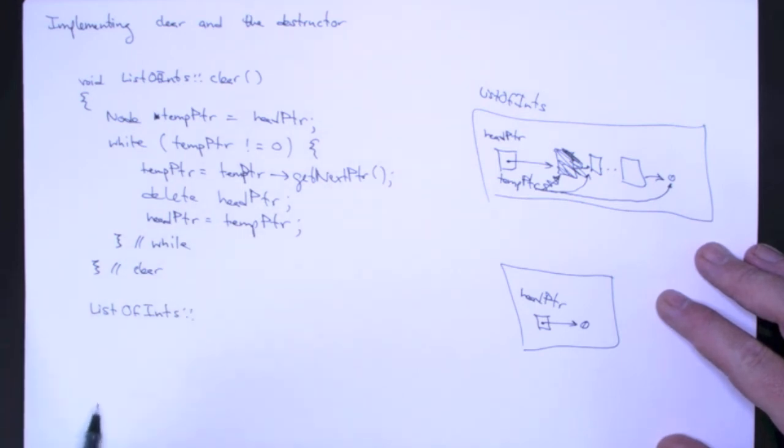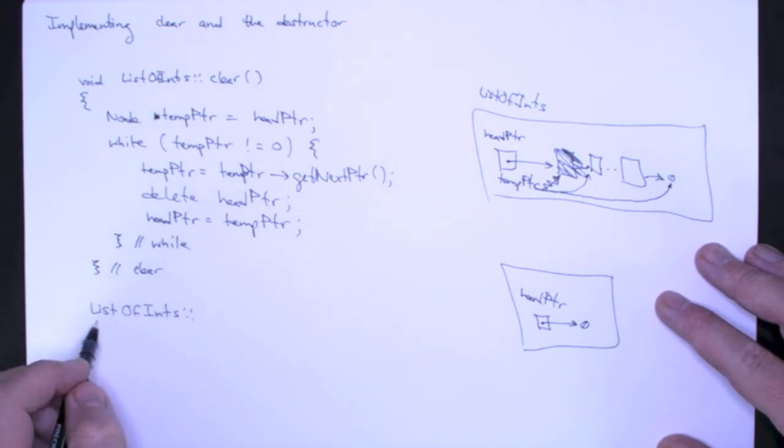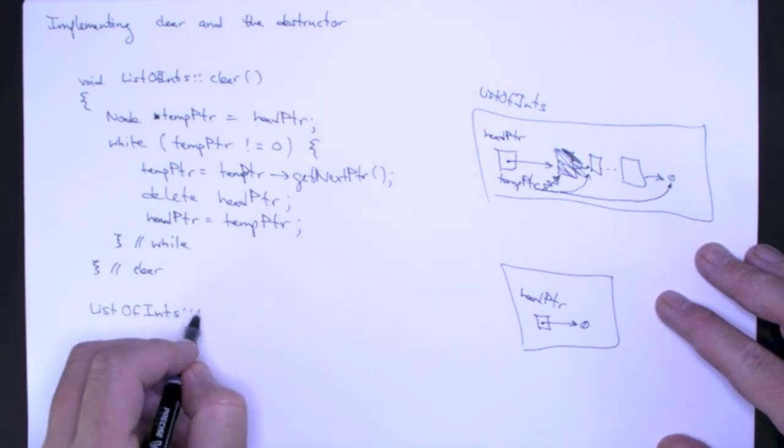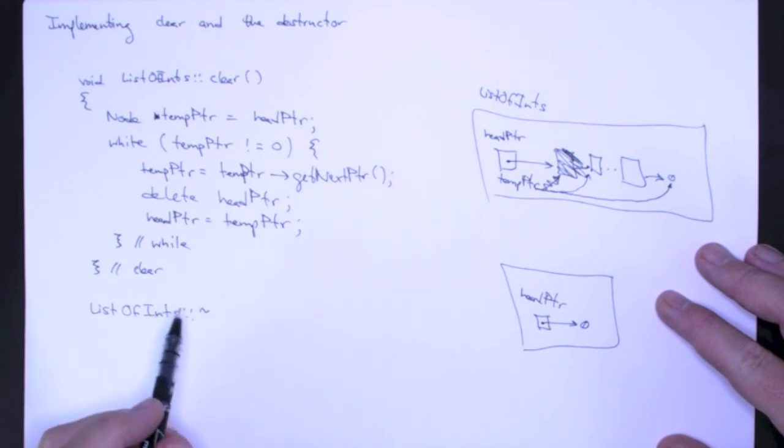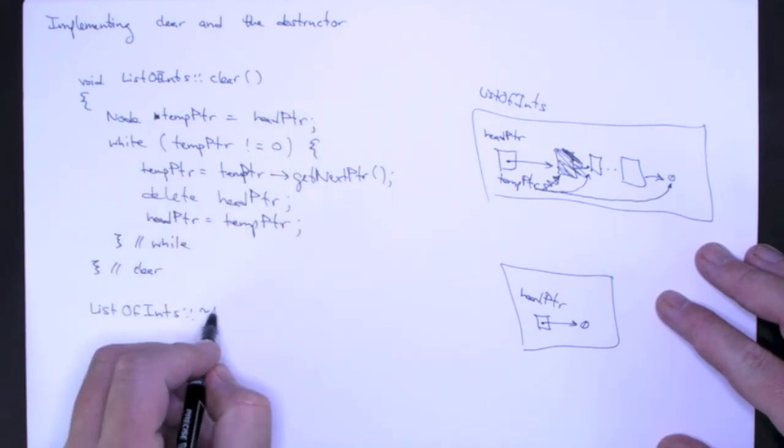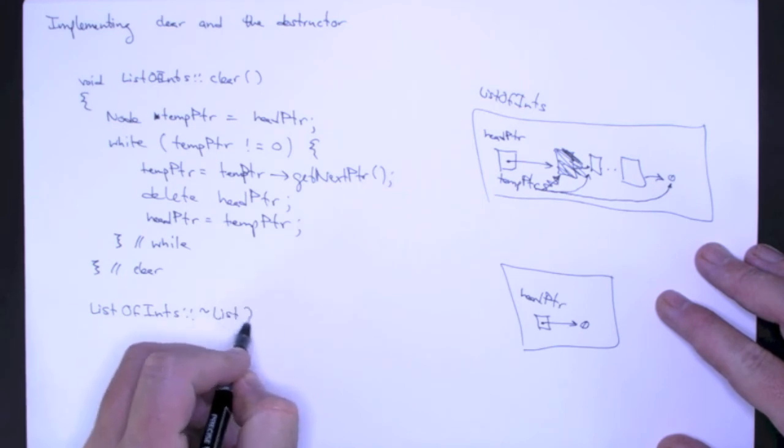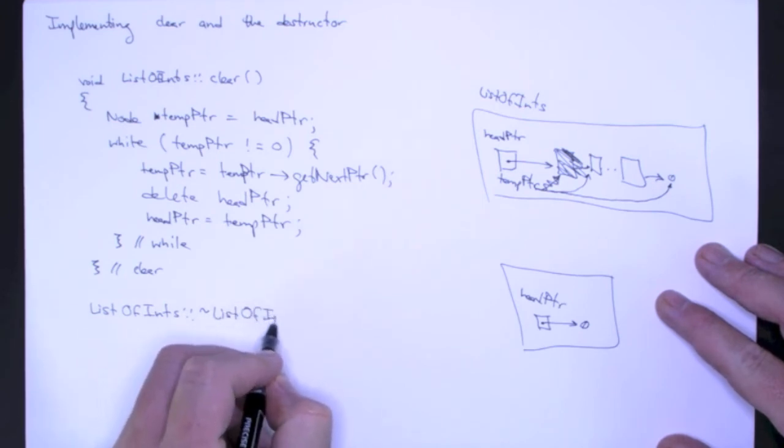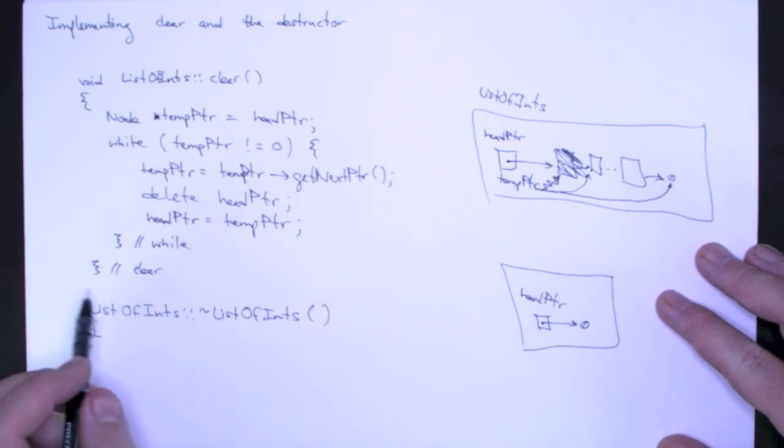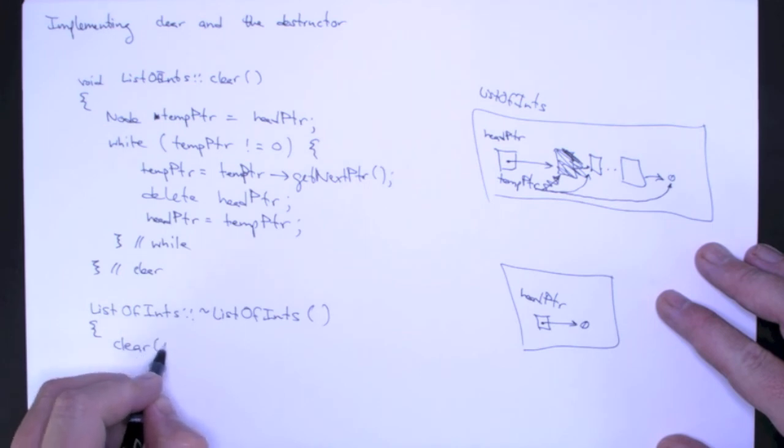So to implement a destructor, we saw this implementation in time, but just to remind you that you start with the class name, the scoping operator and then the name of the method and the name of a destructor is the name of the class preceded by the tilde. And all we need to do is just call clear, just like that.